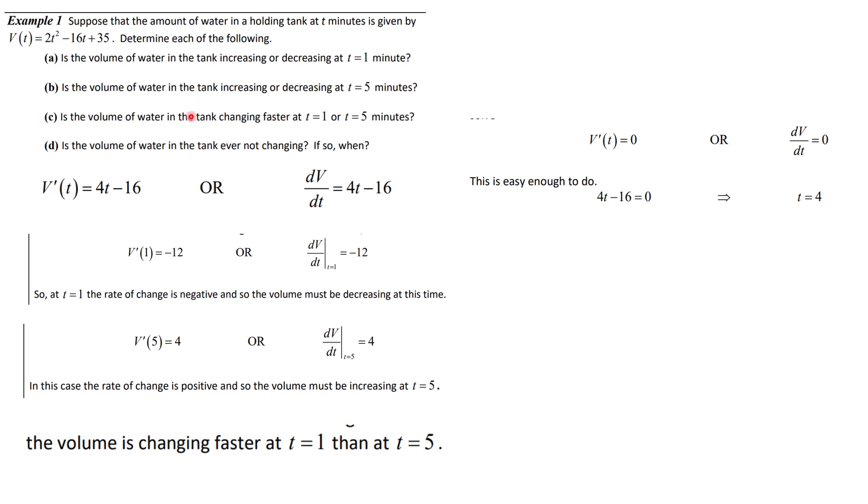The next question says, what's happening at t equal 5? Well, we're going to take the derivative. Again, these values substitute 5. We'll find out that this is 4. And so in this case, since that is a positive number, the volume is increasing at time t equal 5.